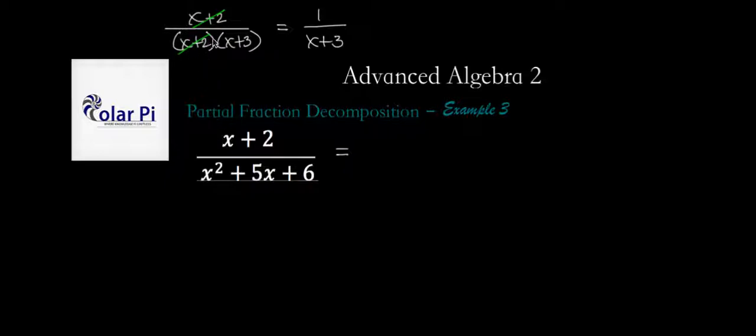But then that means we can cancel the x plus 2 in the denominator with the x plus 2 in the numerator and reduce it to 1 over x plus 3. So this here reduces to this, which in turn by canceling the x plus 2 is the same as this. So we know that the answer to this is supposed to be 1 over x plus 3.